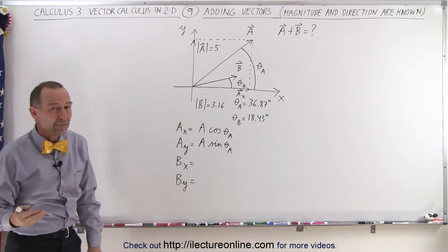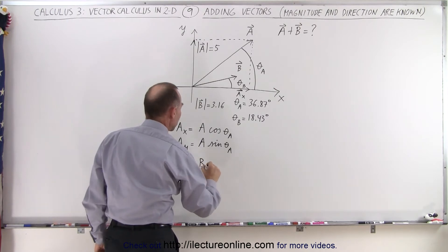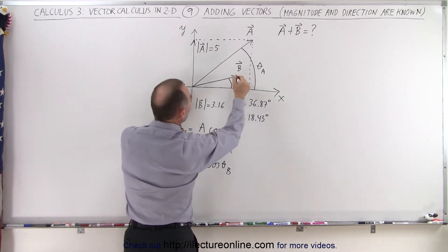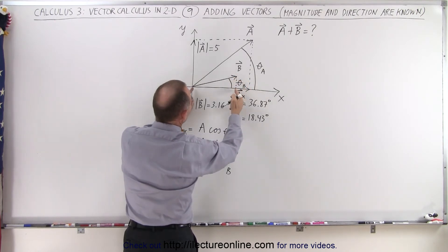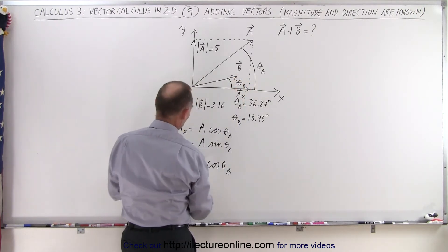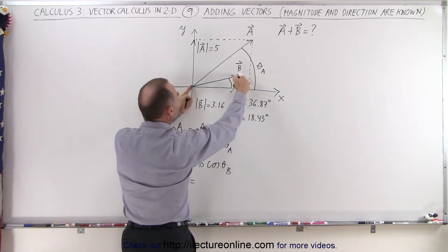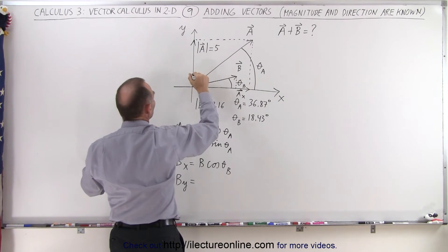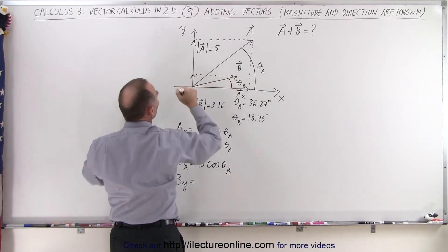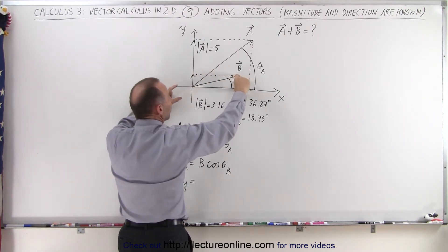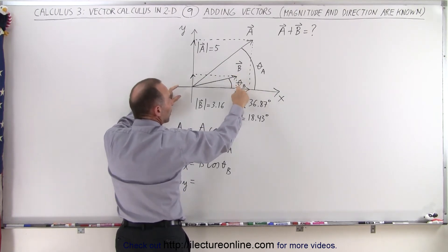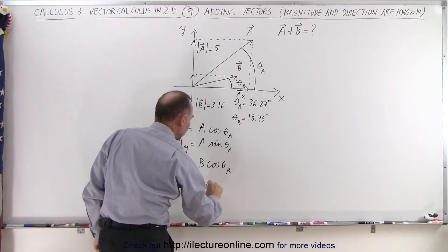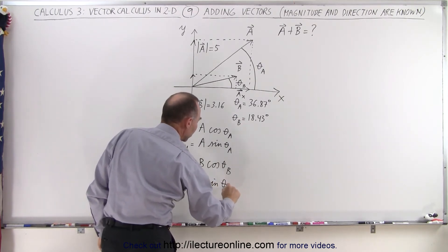We do exactly the same for vector b. Vector b: we take the magnitude of b times the cosine of theta sub b. When we project the b vector onto the x-axis, that would be this length right here. The magnitude b sub x would be the magnitude of b times the cosine of this angle. Then we project that onto the y-axis — that would be the y component of b, the opposite side to the angle theta sub b. So this becomes b times the sine of theta sub b.